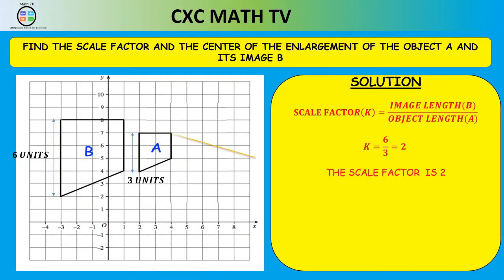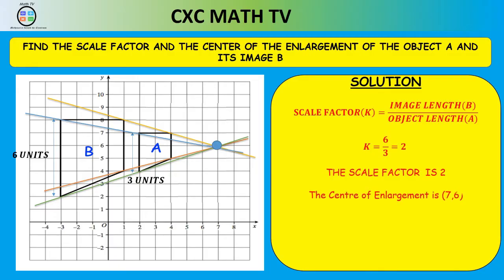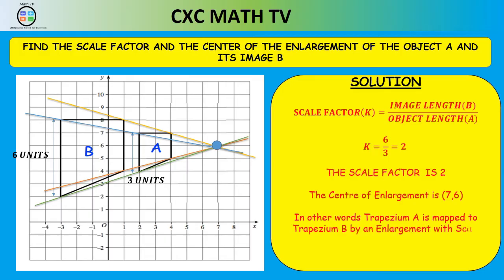To find the center of enlargement, draw a line through each object point and its corresponding image point using different colors. All the lines intersect at the point (7, 6). So the center of enlargement is (7, 6). We say: trapezium A is mapped to trapezium B by an enlargement with scale factor 2 and center of enlargement (7, 6).